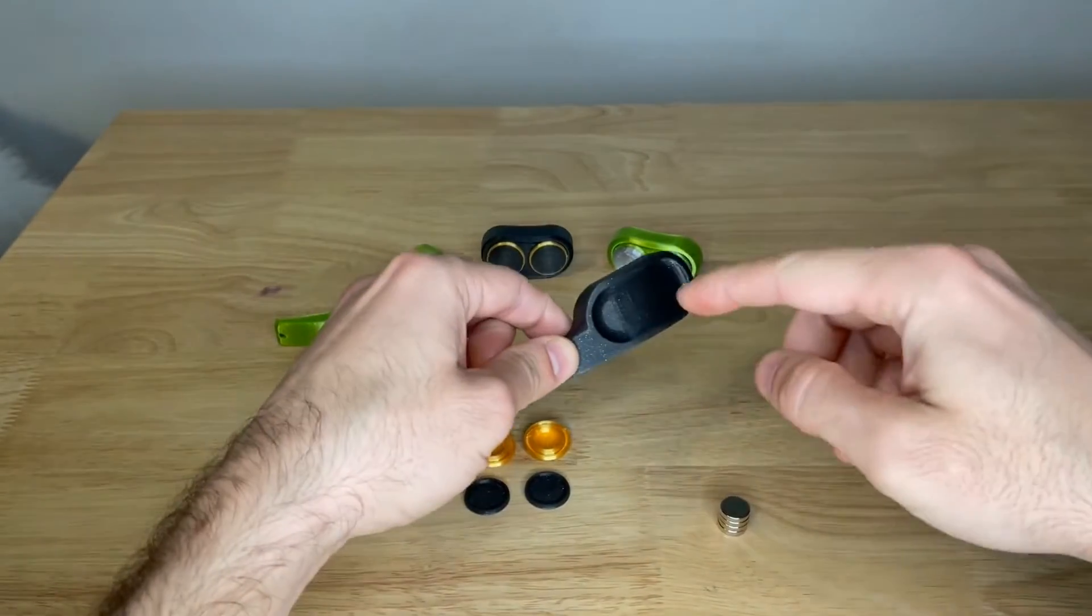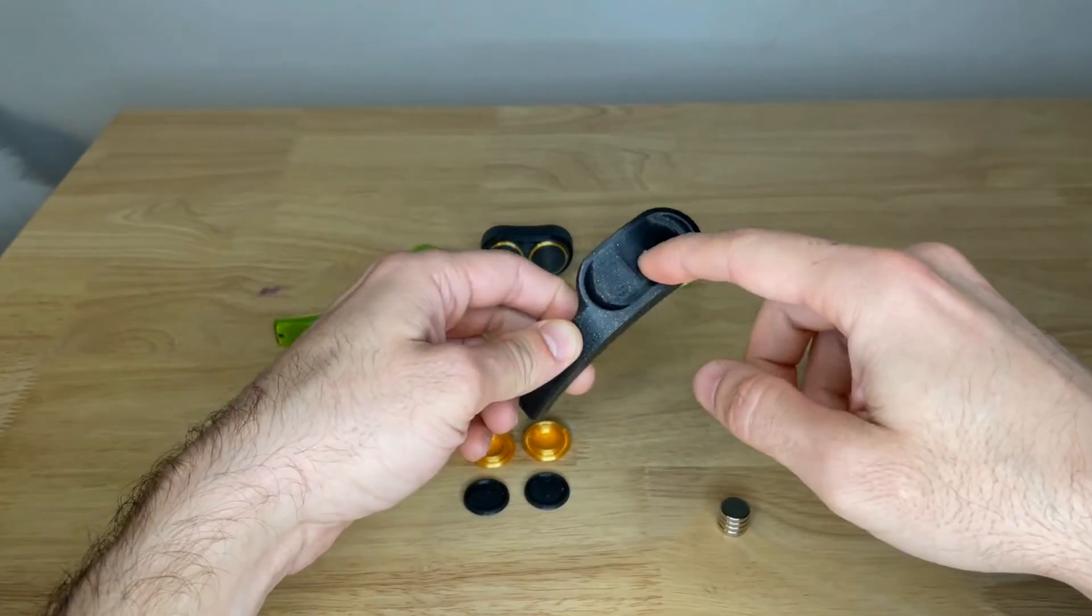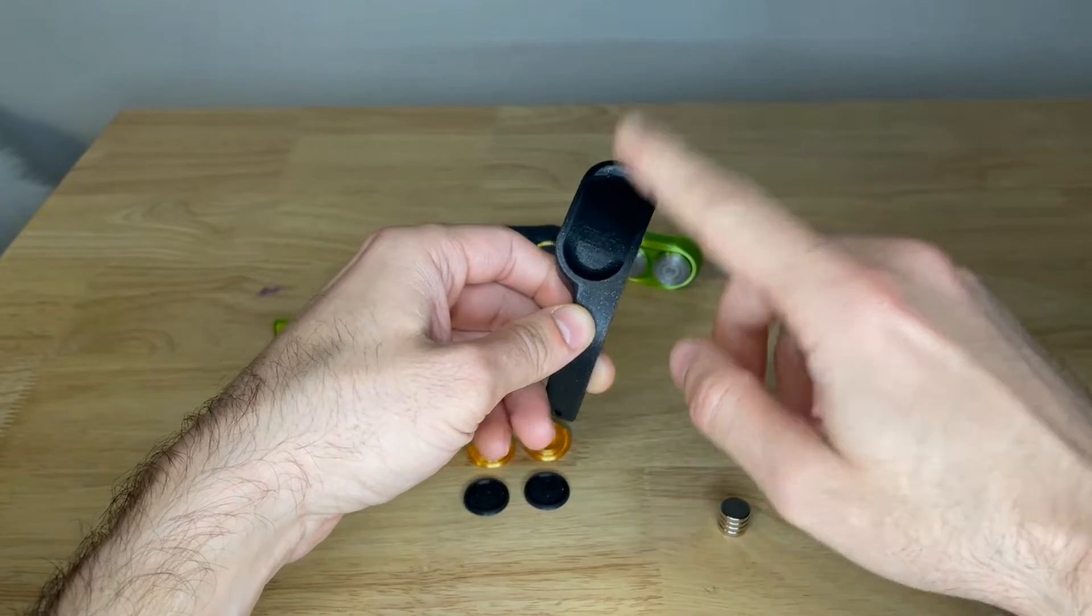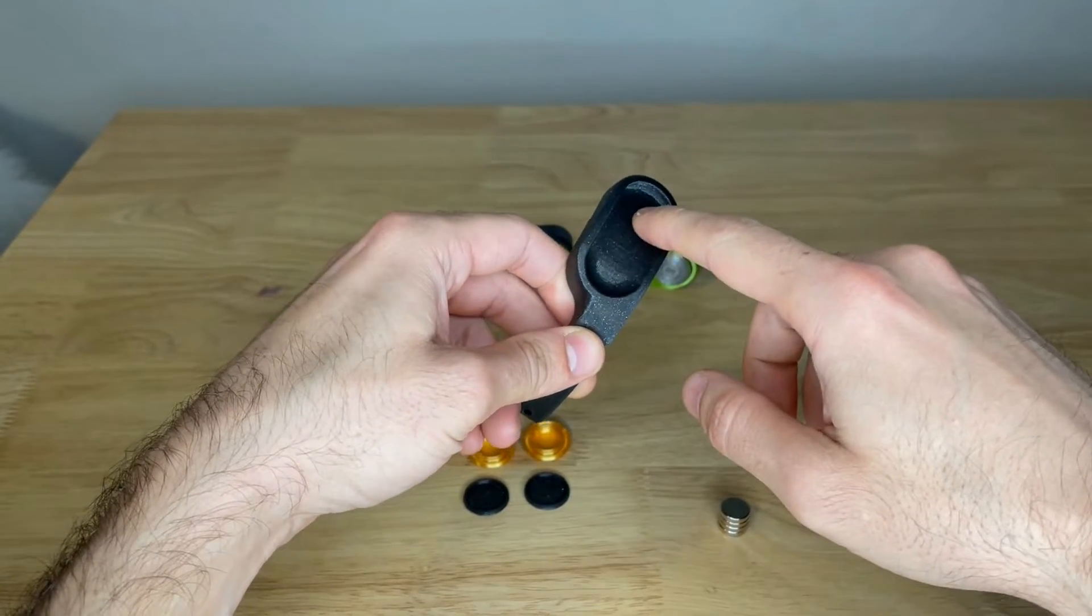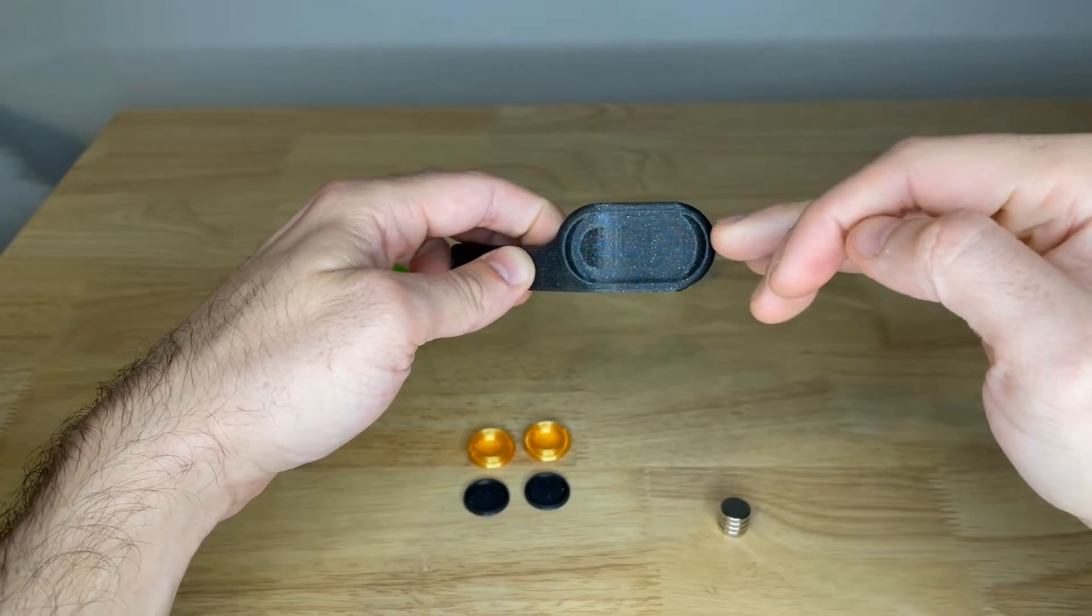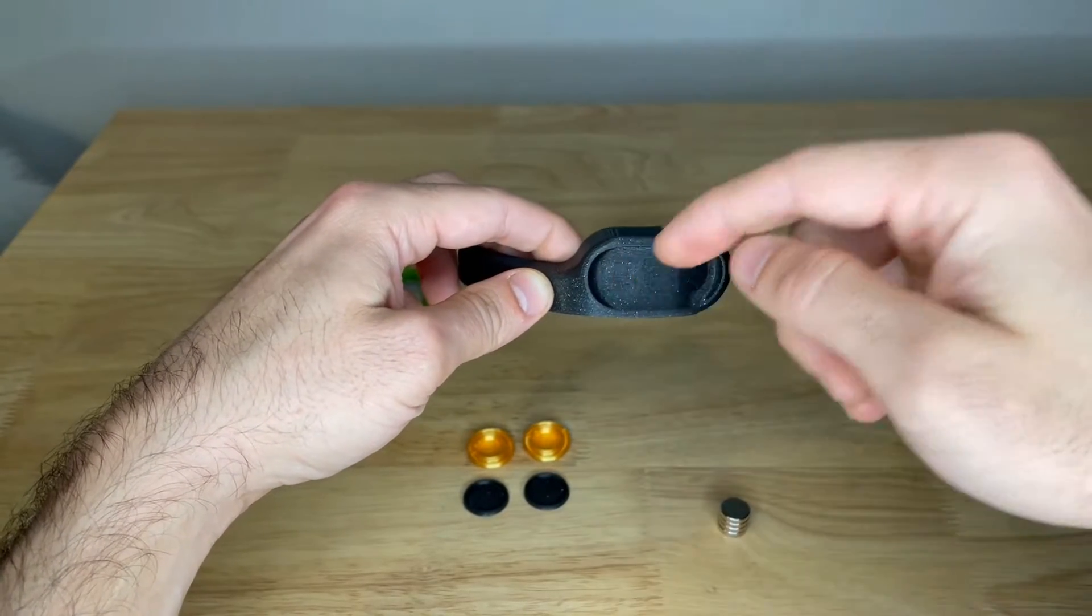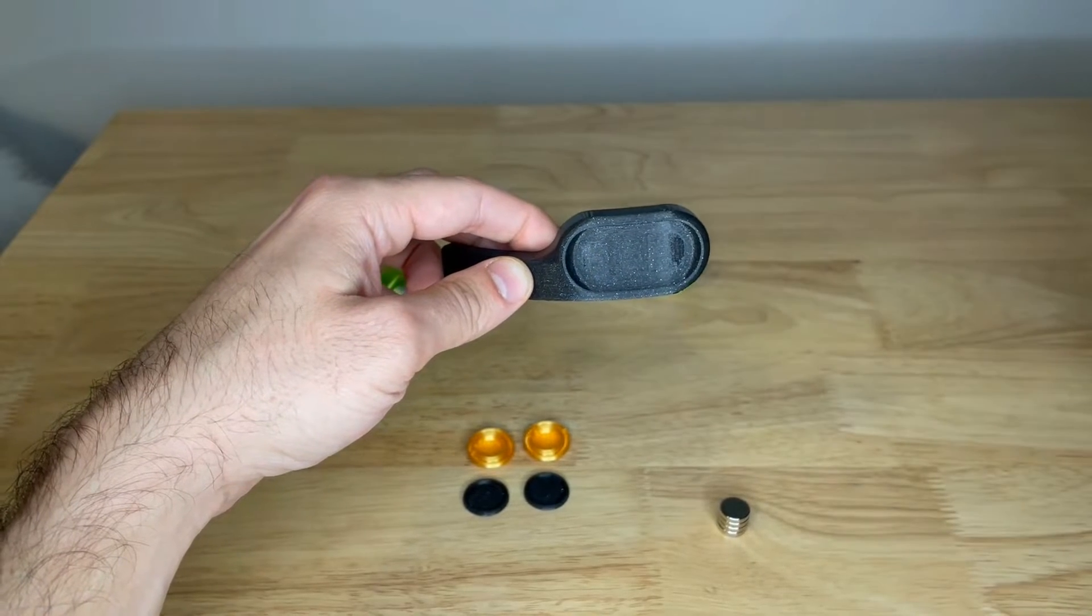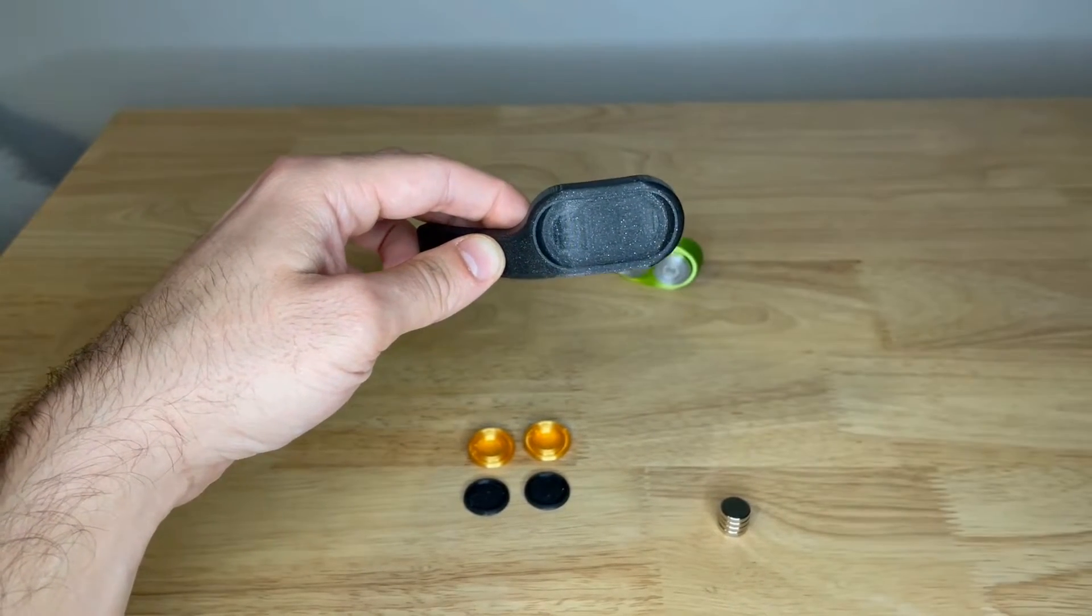The first step is to get 2 of the magnets inside here. I am going to show you how to do it with PrusaSlicer. All you need to do is pause the print. While it's printing we will make a pause, insert the magnets, and resume printing. Let me show you how it is done using PrusaSlicer.